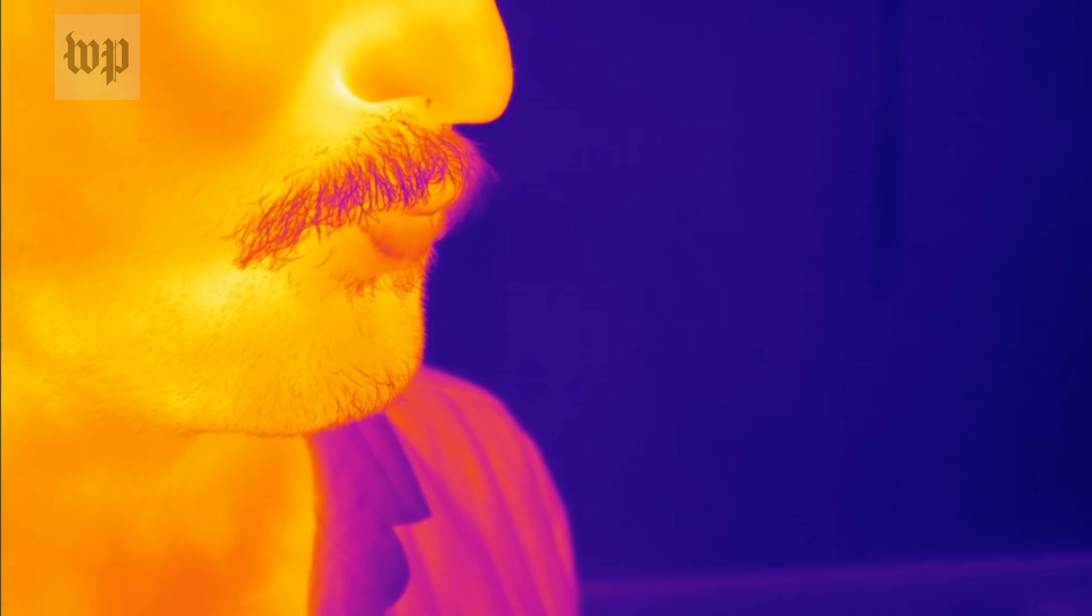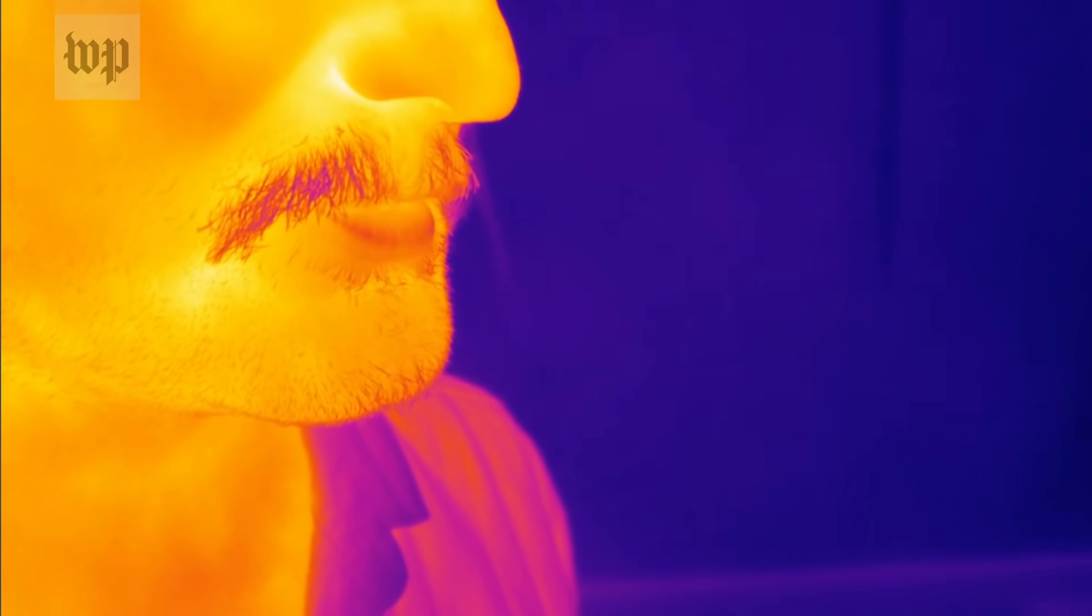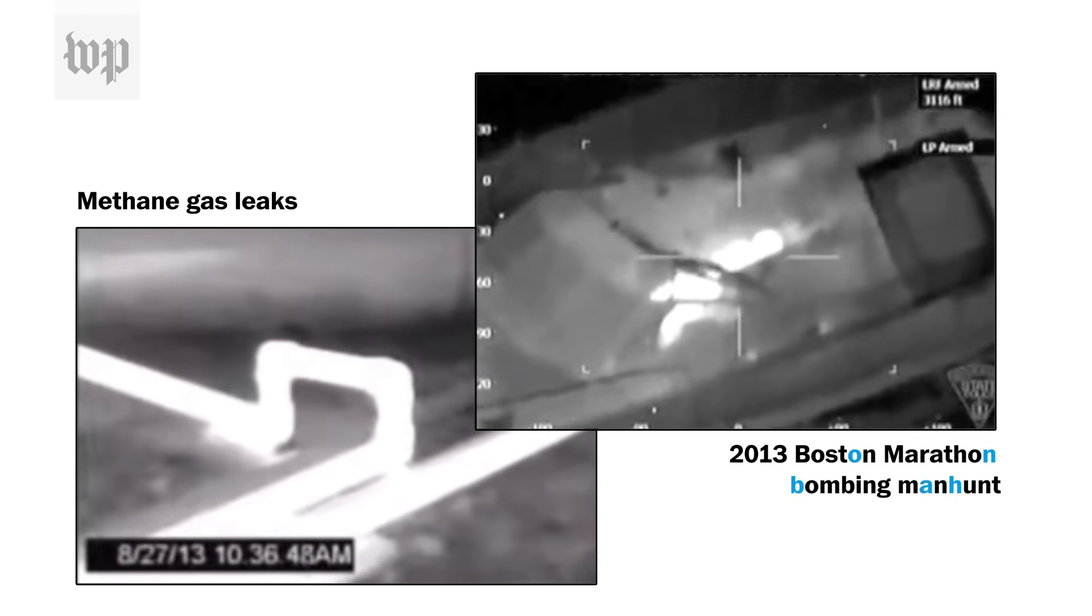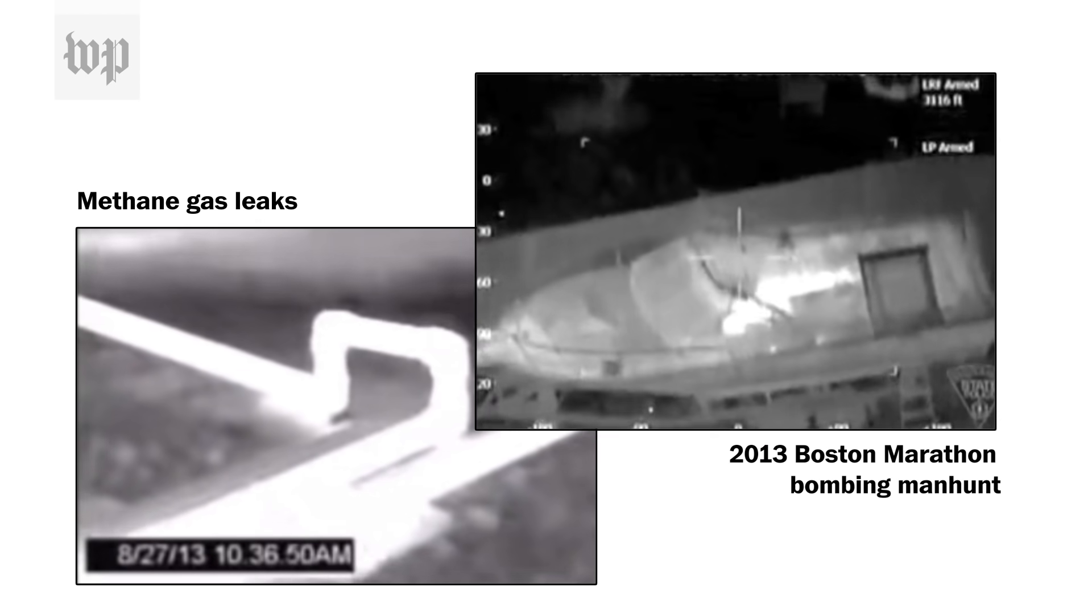In order to visually illustrate those risks, the Washington Post used a high-tech infrared camera capable of detecting exhalation. The camera's advanced technology is more typically used in military and industrial settings, such as detecting methane gas leaks and pipelines. In 2013, it was deployed by law enforcement during the 20-hour manhunt for the Boston Marathon bombers.